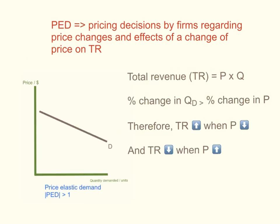What about the case of price elastic demand? Demand is price elastic when the percentage change in quantity is greater than the percentage change in price — the opposite of price inelastic demand. Total revenue will rise when price falls, because any drop in price will cause a much larger, significant increase in quantity demanded.